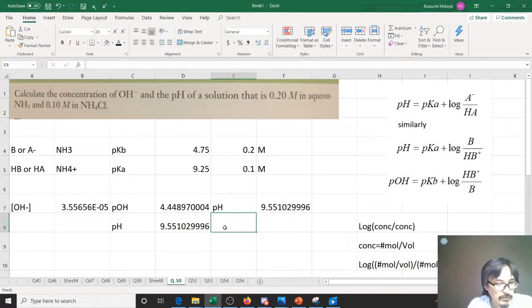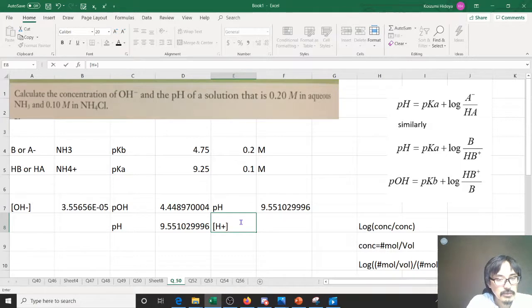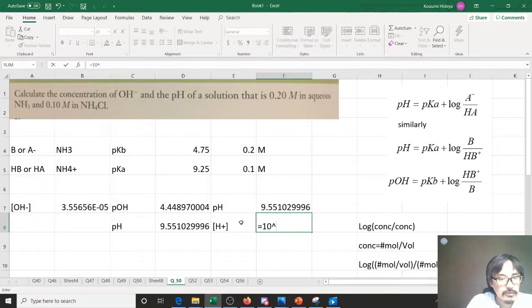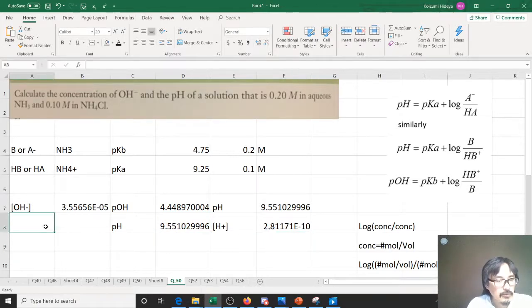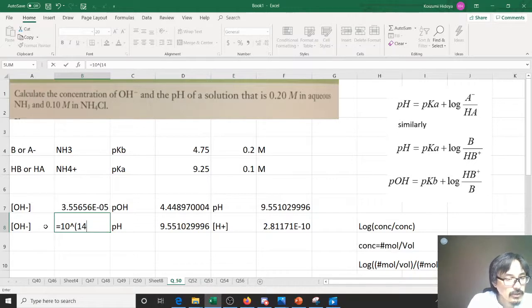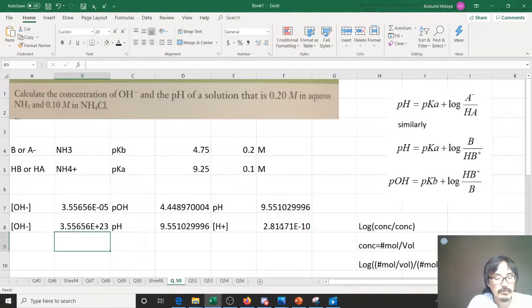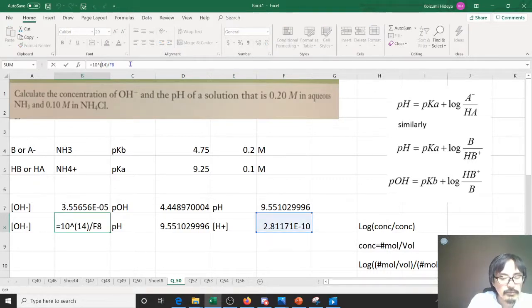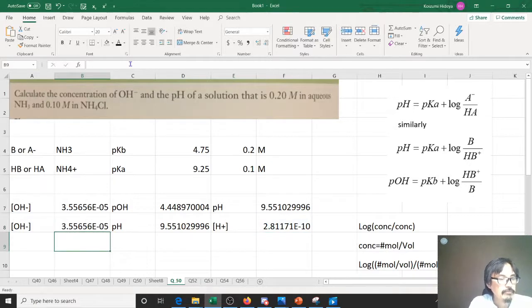The H+ concentration is equal to 10 to the power of negative this one. And then the OH- concentration is equal to 10 to the negative 14 divided by that. You get the same number.